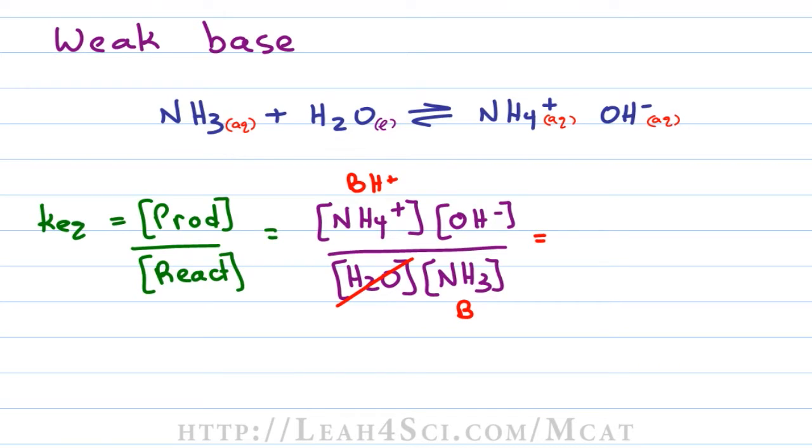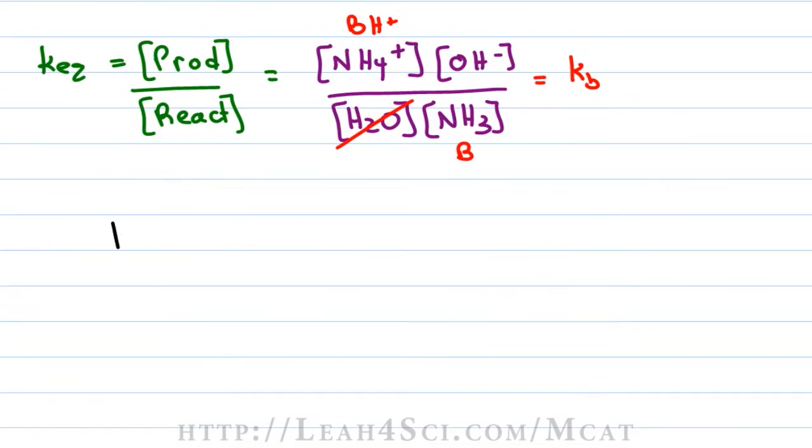The KEQ for a base dissociation can be thought of as a KEQ of base or simply KB where the KB expression is written out as protonated base, hydroxide divided by your starting base.